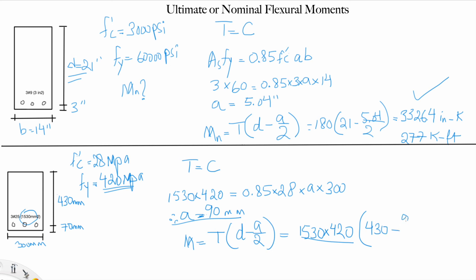That should give me 2.47 times 10 to the power 8 newton-millimeters. Now we don't really read these figures, so we have to convert it into something that is logical. We convert it into 247 kilonewton-meters. So this is it.